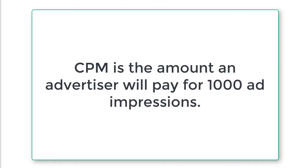The CPM is the amount an advertiser has to pay for those 1,000 ad impressions. Cost — that's how I remember that. Somebody has to pay, that's the cost, CPM. I get to reap it, RPM. I hope that makes sense and that helps you remember the difference.